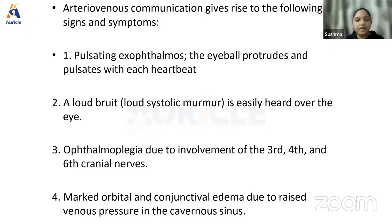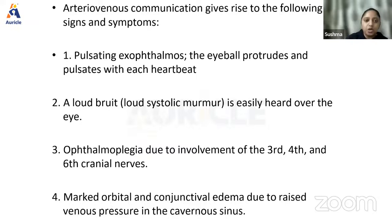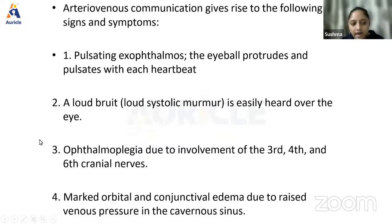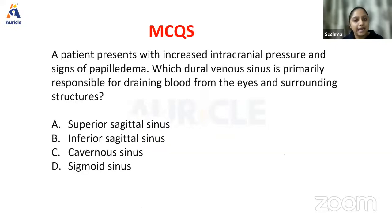In pulsating exophthalmos, you can hear a loud systolic bruit by placing the bell of a stethoscope near the eye. Ophthalmoplegia occurs due to involvement of cranial nerves III, IV, and VI, and there will be marked orbital and conjunctival edema. This requires urgent decompression — ventriculostomy to reduce intracranial pressure, closure of the AV shunt, and shunt surgery — making it a very complicated neurosurgical situation.